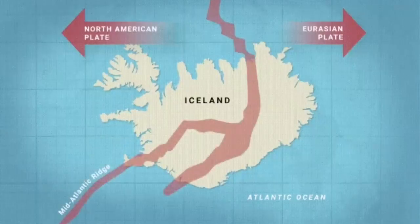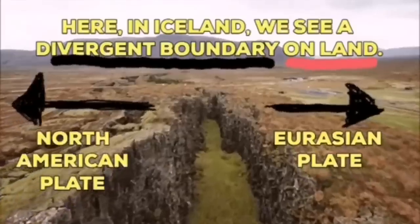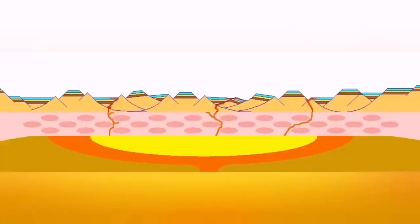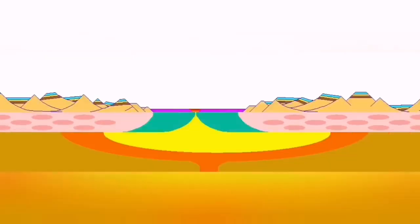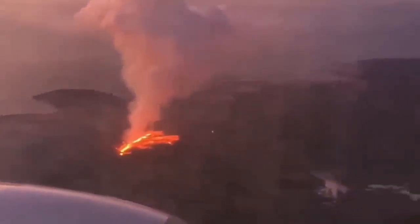Such a thing happens in Iceland, on the land, we can see it. Eurasian plate and North American plate, through these grabens, this is the hollow that you see in the middle, are separating.